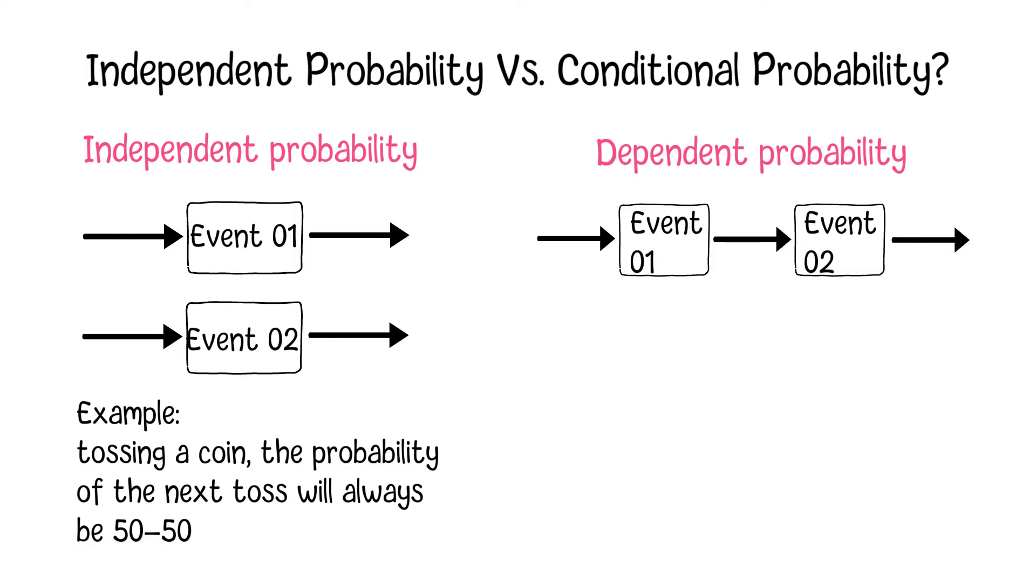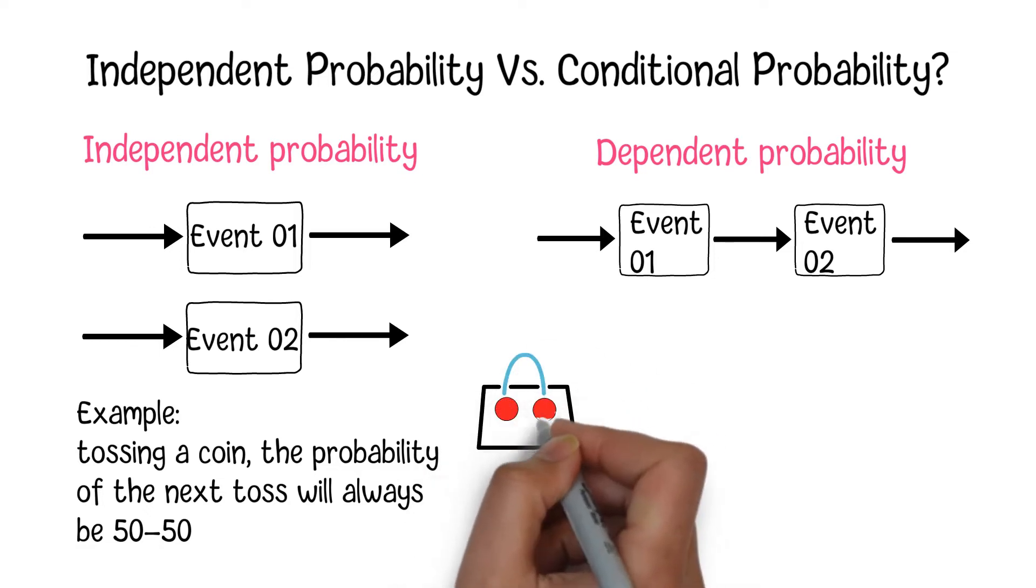For example, if you have a bag having two red balls and two green balls in it, every time you grab a ball from the bag, the ratio of remaining red balls and green balls will change. So, in the next round, the probability to get a specific colored ball will change.